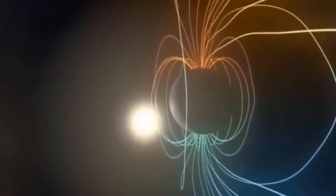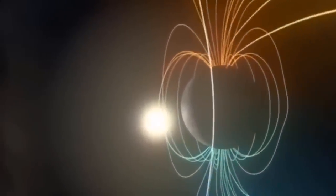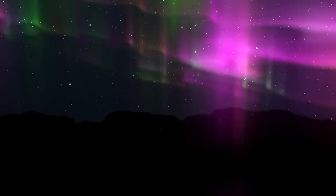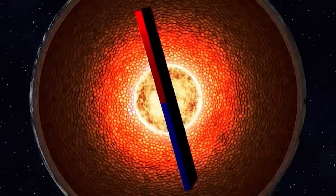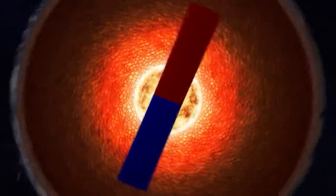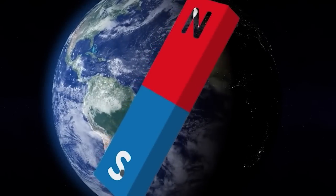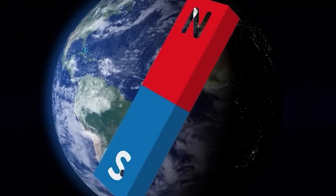Several hypotheses exist regarding the triggers for these disruptions. Certain events could provoke disturbances in the flows within the outer core. These events might include asteroid or comet impacts, interactions between the core and mantle such as the formation of new magma plumes, or the subduction of continental plates.